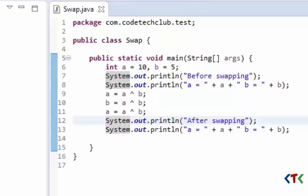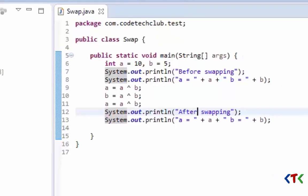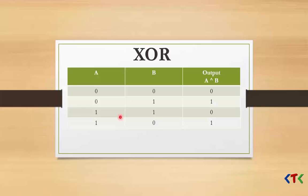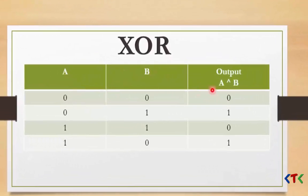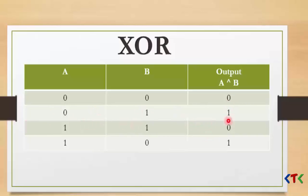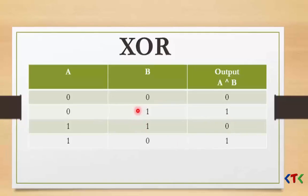Before this, we need to understand how the exclusive OR operator works. Here you can see the XOR operator's truth table. These are inputs a and b, and this is the output. If inputs are 0 and 0, output is 0. If inputs are 0 and 1, output is 1. If both inputs are the same, output is 0. If both inputs are different, output is 1. This is how the XOR operator works.